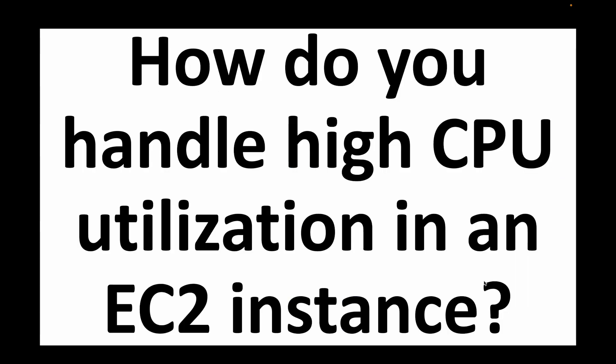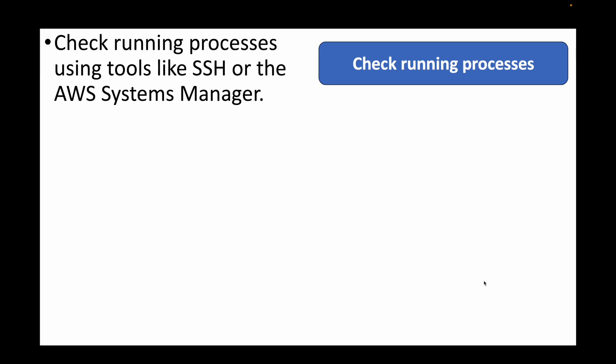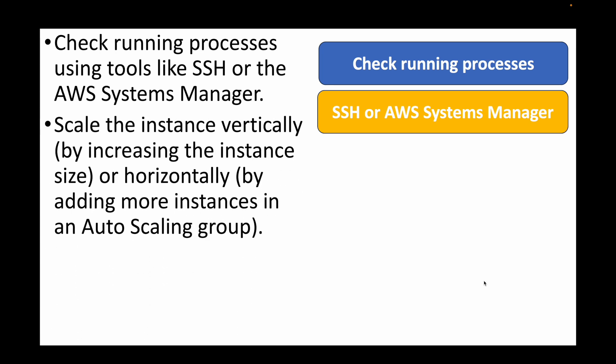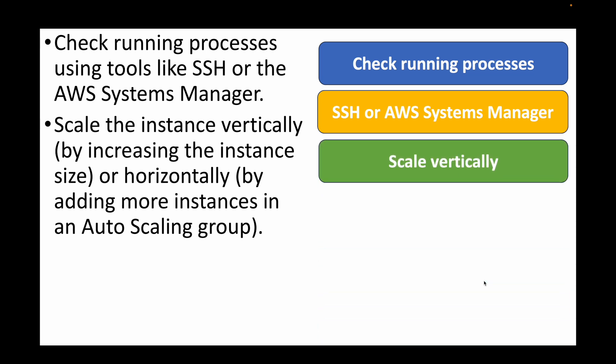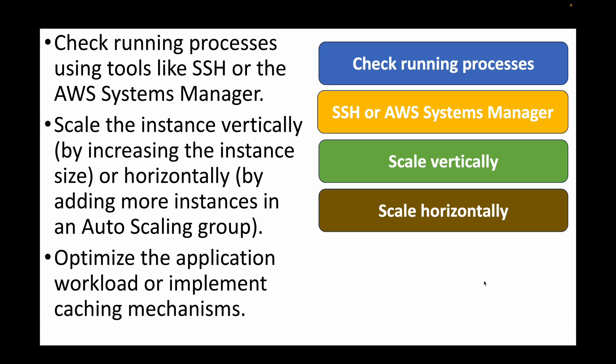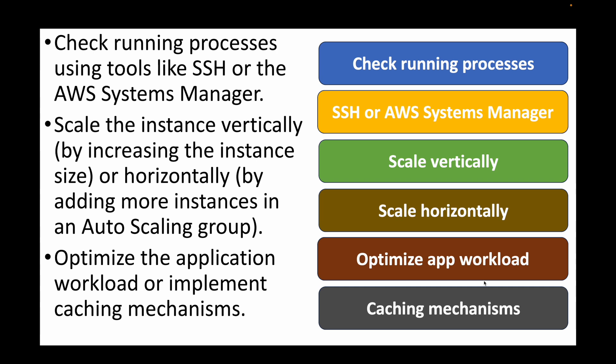The next question is: how do you handle high CPU utilization in an EC2 instance? We need to check if there are any processes running on your EC2 instances. For this we can use tools like SSH or AWS Systems Manager — log into the EC2 instance to check running processes. We can also think about scaling the instances, either vertically by increasing the instance size, or horizontally by adding more EC2 instances.